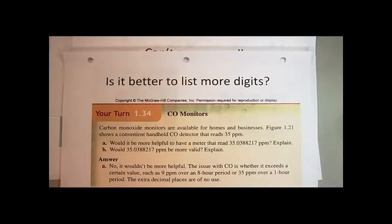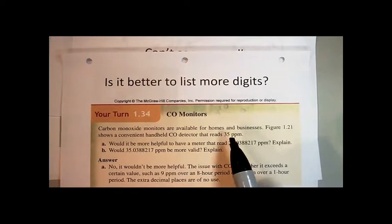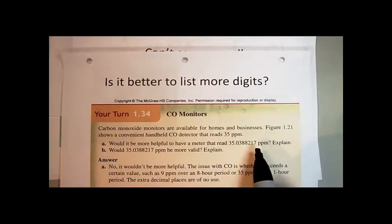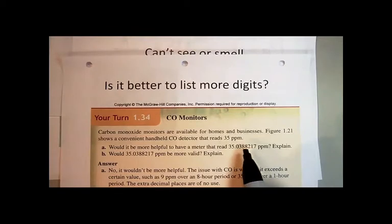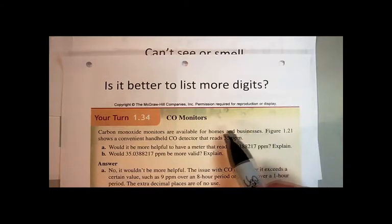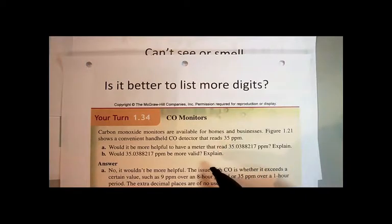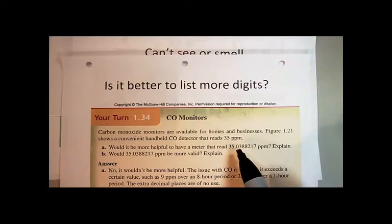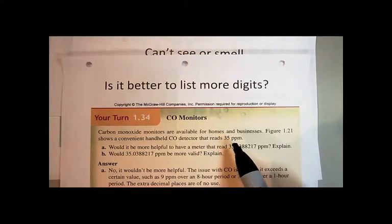So on your carbon monoxide sensor, if what you're worried about is whether you're safe or not, does it make any difference to read it out to 35.0388217 parts per million? The answer is no. Because all you need to know is: am I above 35? Then I'm not safe. Am I below 35? I'm safe — though if it's going to be a long exposure, it's not safe. In the short term, you ought to be fine. Just putting all those extra numbers doesn't add to the device or its purpose. It's just confusing to the consumer.